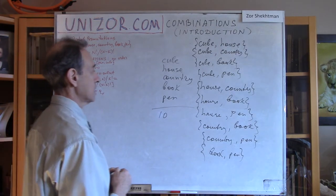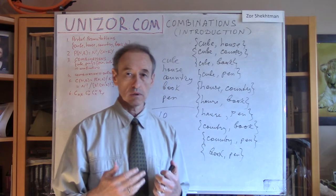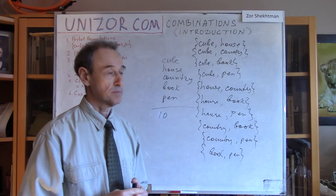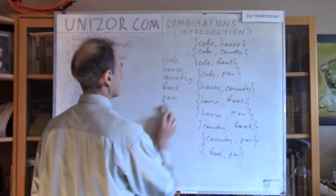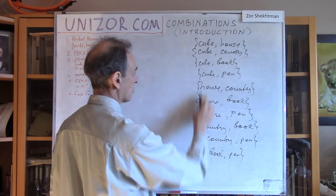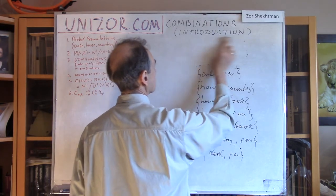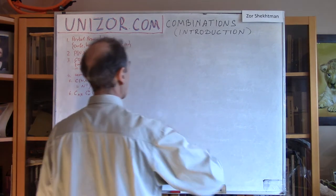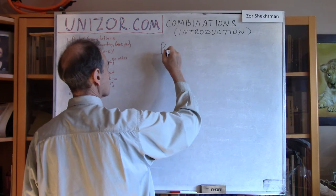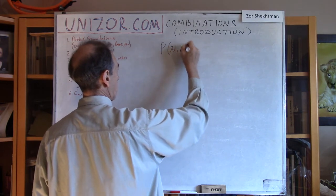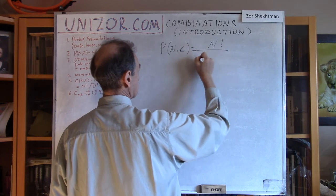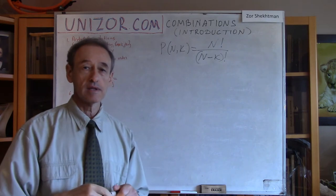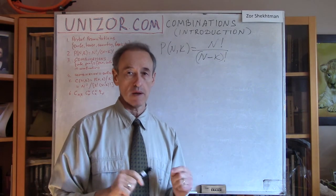Now let's think about how we can calculate how many different combinations exist. Let's forget this particular example for a second — just remember we have ten, because in the future we will check this against the formula. Let's go back to our formula for partial permutations, which gives us the number of partial permutations where we do care about order.